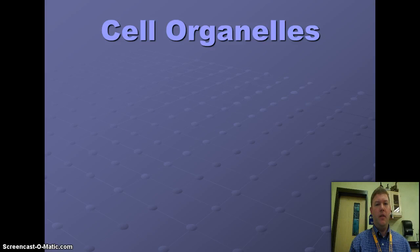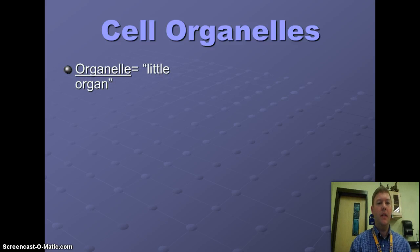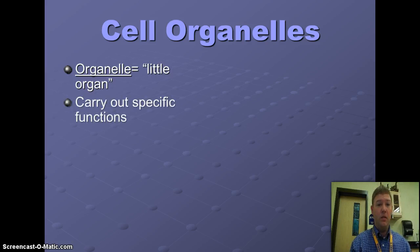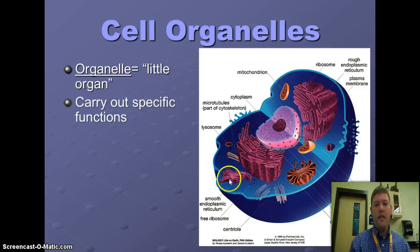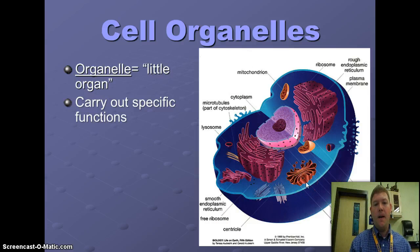Cell organelles — you'll hear me talk about organelles. Organelle means little organs, and throughout our cell we have multiple little organs that each have a specific function. These include the mitochondria, the endoplasmic reticulum, the Golgi apparatus, ribosomes, and lysosomes — all specific little organs or organelles that have a function.